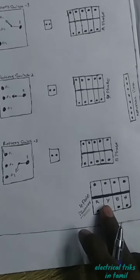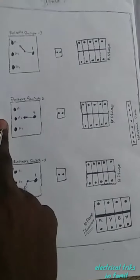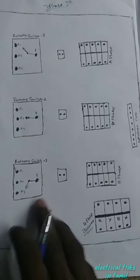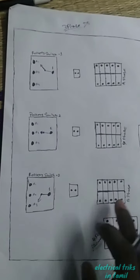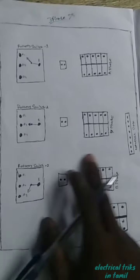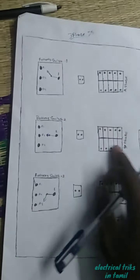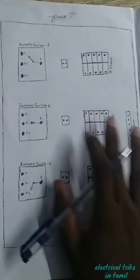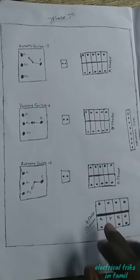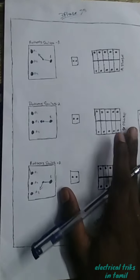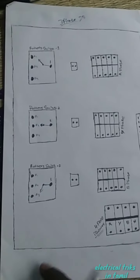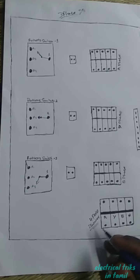This is a 4-Pol Isolator. This is a 3-position Rotary Switch. This is an Indicator. This is a 15 MCP, this is a 5 MCP. This is a DB Box. This is a 3-phase.